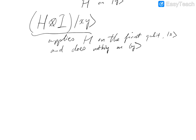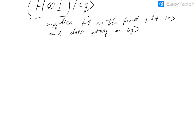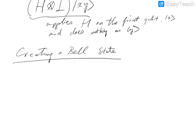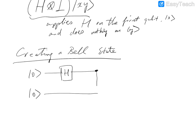We spoke about Bell states in previous lectures — how do we create one? To create a Bell state, all we need is the Hadamard transformation and a CNOT transformation. We're going to create a two-qubit Bell state where both inputs are fixed to zero. We apply a Hadamard transformation on the first qubit and then take CNOT of the first qubit (control) and the second qubit (target). The output is a Bell state.